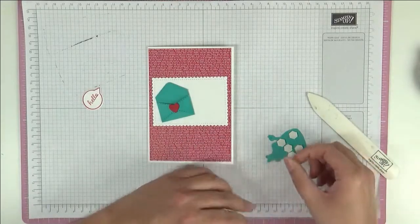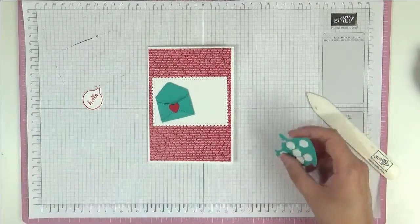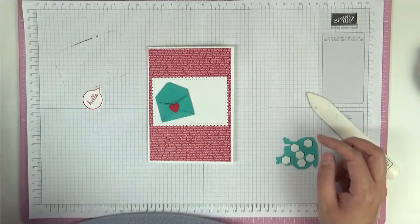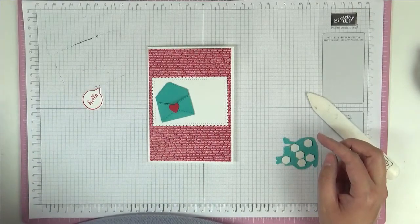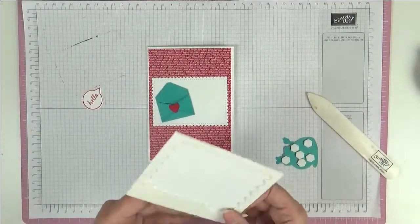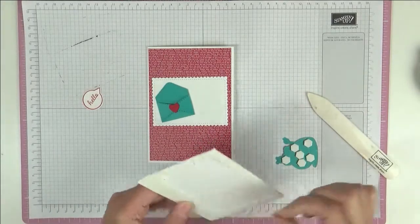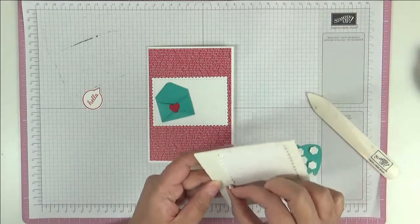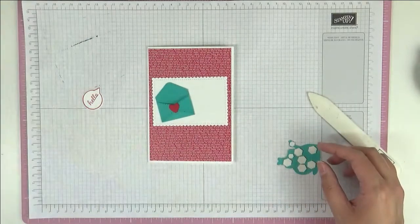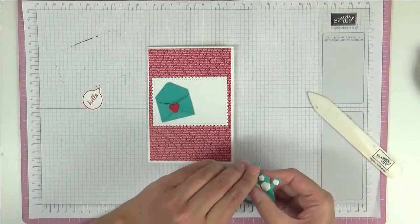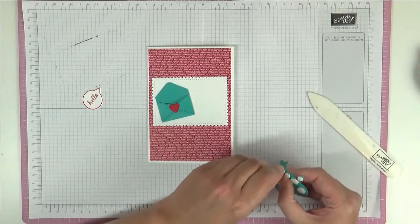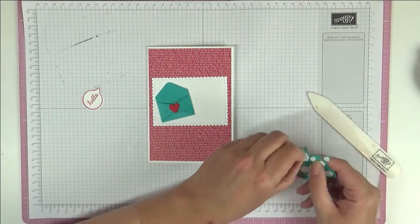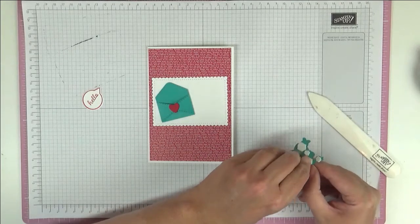If I had to choose in the catalogue which colours I wanted to remain forever it would be Bermuda Bay, Real Red and Melon Mamba. There's others I like too don't get me wrong, like I like Coastal Cabana a lot as well, but if I had to absolutely just choose three it would be those three nice bright colours.